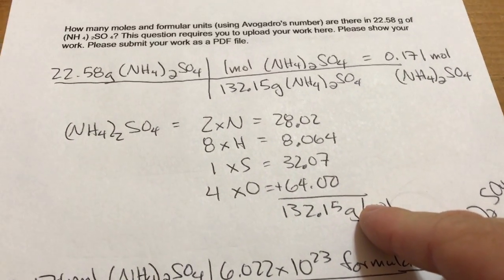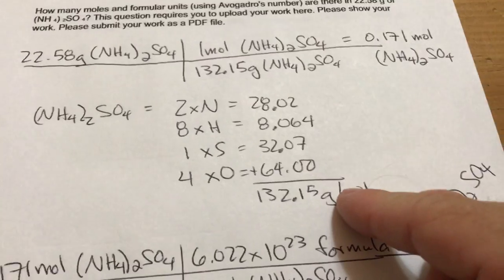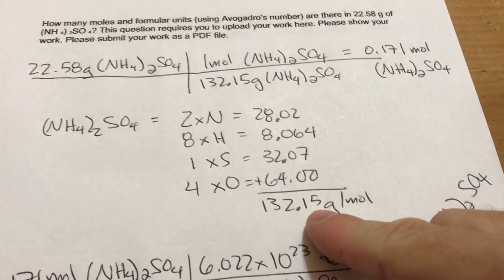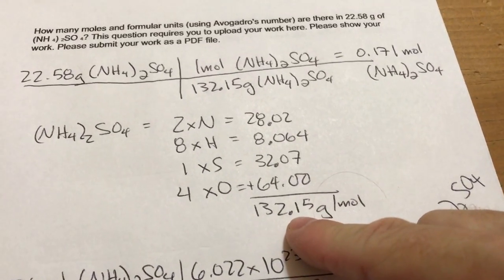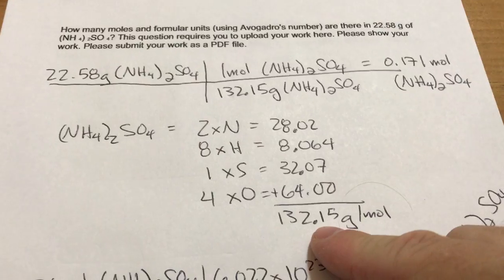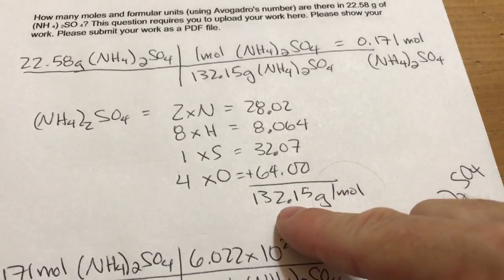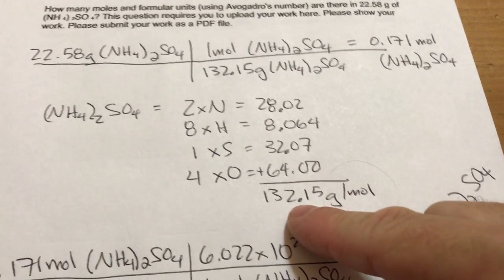When we do molar masses in this class, I typically am used to carrying two decimal places. What I've said is all your molar masses should have four sig figs, and we will never round to the nearest gram.